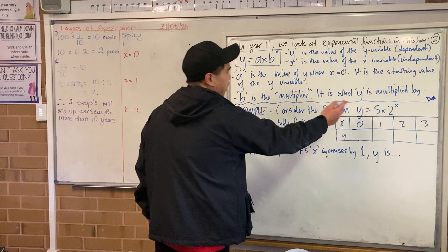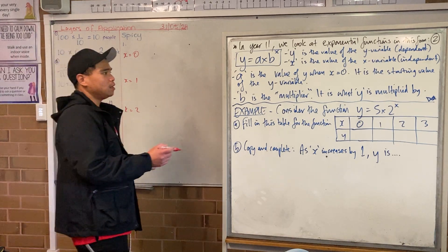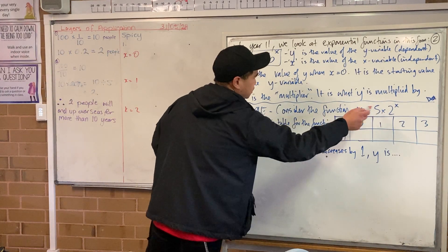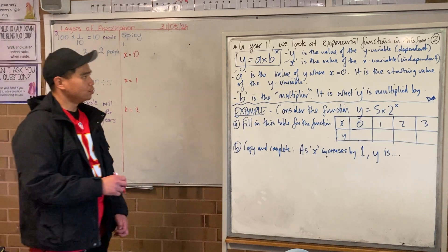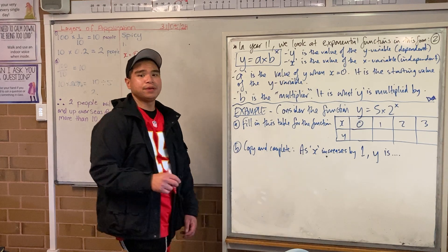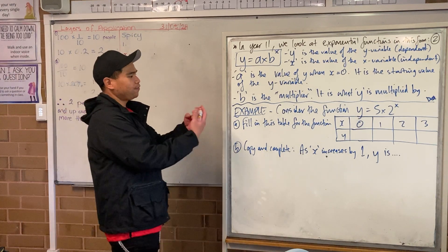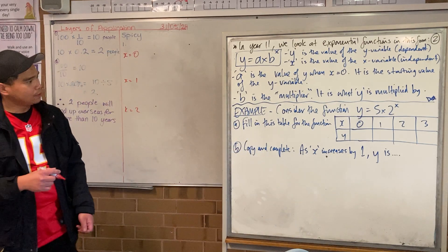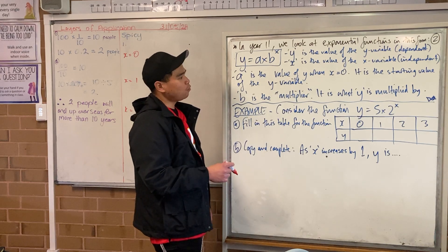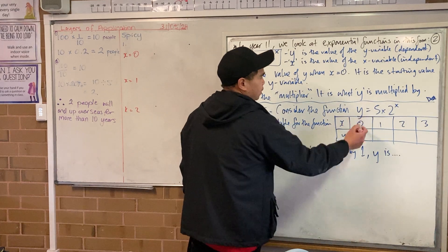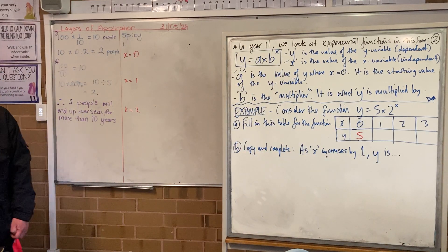Consider the function y is equal to 5 times 2 to the power of x. Can someone tell me what the value of a is in this particular function — which number is it, 5 or 2? 5. Good. And which one is the multiplier b? 2. Good. So how do we fill in the table of an exponential function? I already told you that a is the starting value of y when x is equal to 0, so that's going to be 5. I'll also use maths to show you why it's 5.